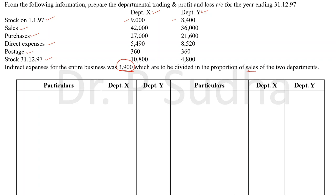We have to prepare a departmental trading and profit and loss account. In the normal trading account, we have a debit side and a credit side, each with a particulars column and an amount column. In a departmental trading account, we have amount columns depending on the number of departments. In this question, we have two departments, so there are two amount columns: department X and department Y. If you have three departments, you provide three columns. All direct expenses go to the trading account; indirect expenses go to the P&L account.